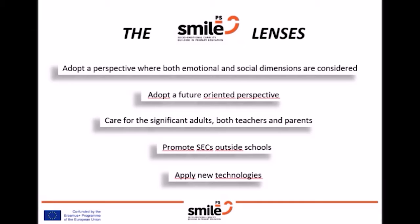Caring for adults — both teachers and parents — is essential. Creating an environment where adults take care of their social and emotional well-being, and in which children feel safe to express their emotions with the contribution of teachers and family, is essential for healthy social emotional outcomes in young children, because the attitudes and beliefs of meaningful adults play a key role. Promoting social emotional competence outside school, through repeated exposure in real-life contexts and with meaningful relationships, is also a goal.